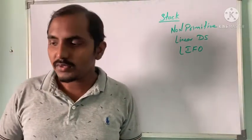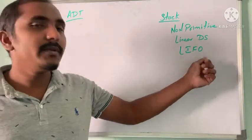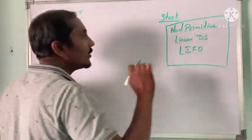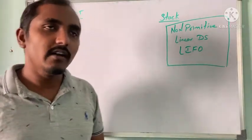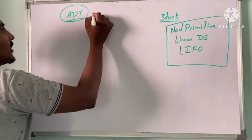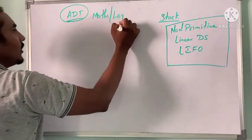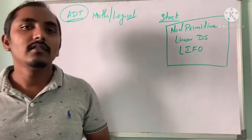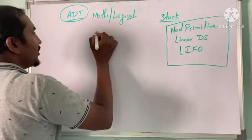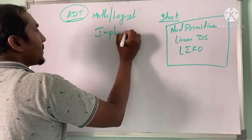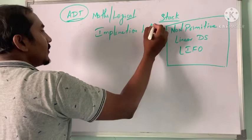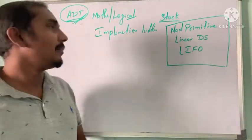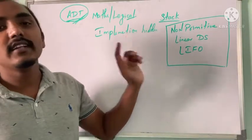Last In First Out means the data that is inserted last will be deleted first. That is how the stack data structure works. Abstract Data Type represents the mathematical or logical information about the data structure — about the data structure we represent only the mathematical and logical details, while the implementation details are hidden. That representation is considered as ADT. So Abstract Data Type is a data type that represents the logical or mathematical details of the data structure and hides the implementation details.